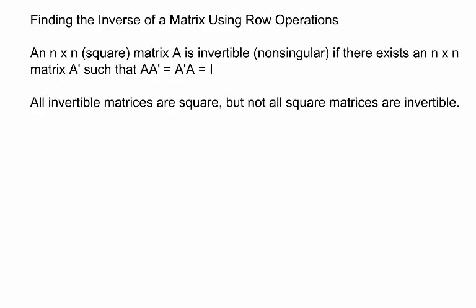An n by n square matrix A is invertible, or non-singular, if there exists an n by n matrix A prime such that A times A prime is equal to A prime times A, which is equal to I, the identity matrix. Note that all invertible matrices are square, but not all square matrices are invertible.